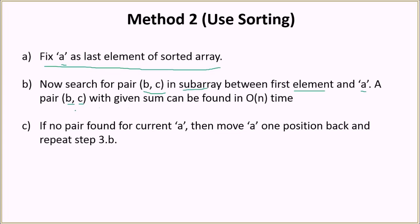We search for a pair b and c in the subarray such that b plus c equals a. This pair search can be done in O(n) time using a two-pointer approach. If no pair is found for the current value of a, we move a one position back and repeat step 3b. We keep changing a until we find a Pythagorean triplet, or if none is found for any element, we conclude that no Pythagorean triplet exists.